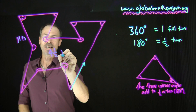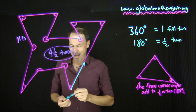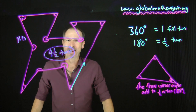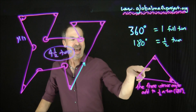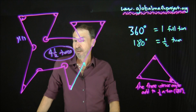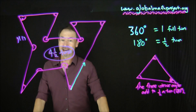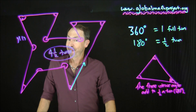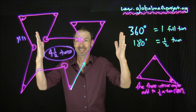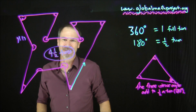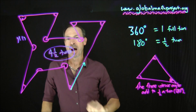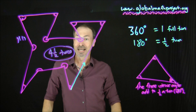Now I'm wondering if we can develop a general theory. The angles of a triangle add up to half a turn, a four-sided shape to one full turn, and an 11-sided shape to four and a half full turns. Can you find a general formula for the sum of interior angles of an n-sided shape?